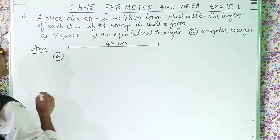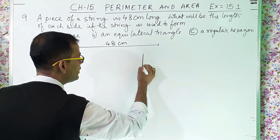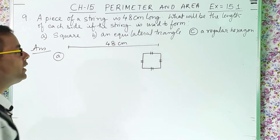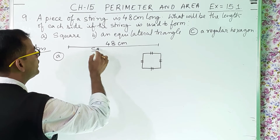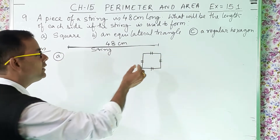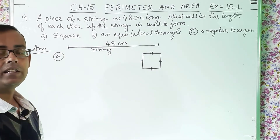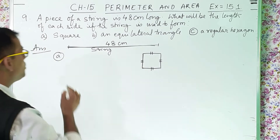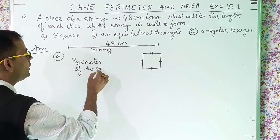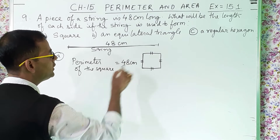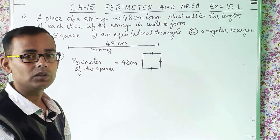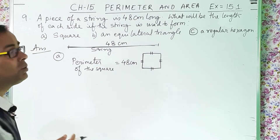Number one, you are using this string to make a square. A square has four equal sides. You are bending this string in the form of a square. That means 48 centimeter is nothing but the perimeter of the square. So perimeter is given — perimeter of the square is 48 centimeter. In the previous sums, the sides were given and you were finding out the perimeter. Now it is just the opposite — perimeter is given and you have to find out the length of each side.